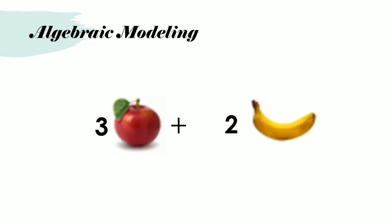Let us now discuss the idea of algebraic modeling. Recall when we counted the assortment of fruits, we had three apples plus two bananas. But what if we were to replace the word apples with a picture of an apple and the word bananas with a picture of a banana? Then we could have this. This is a form of algebraic modeling because we use symbols to represent the fruits.